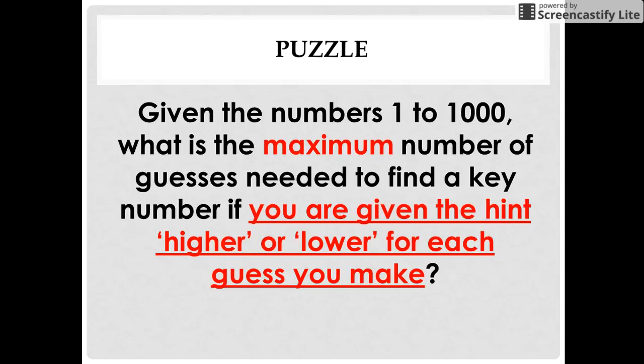For example, if the key number assumed by your friend is 25, now you start guessing that key number and your first guess to him is 100. The hint provided to you by your friend would be lower, which signifies that the key number assumed is lower than 100.